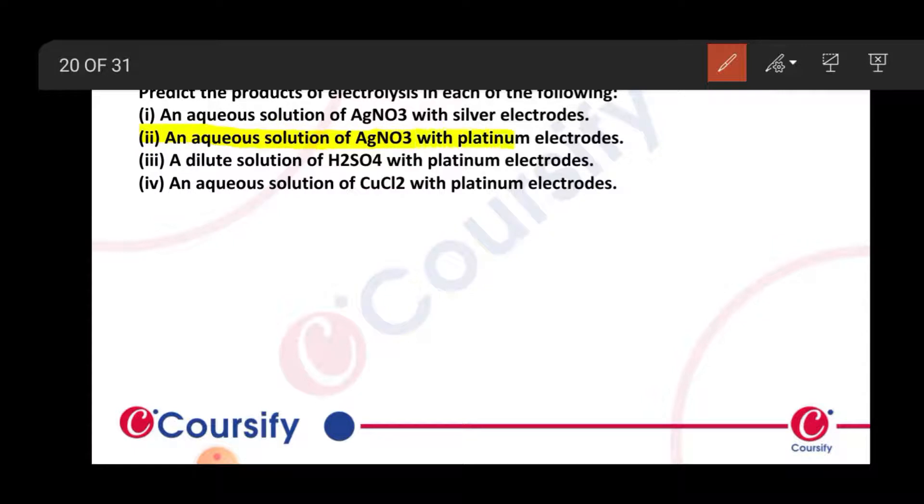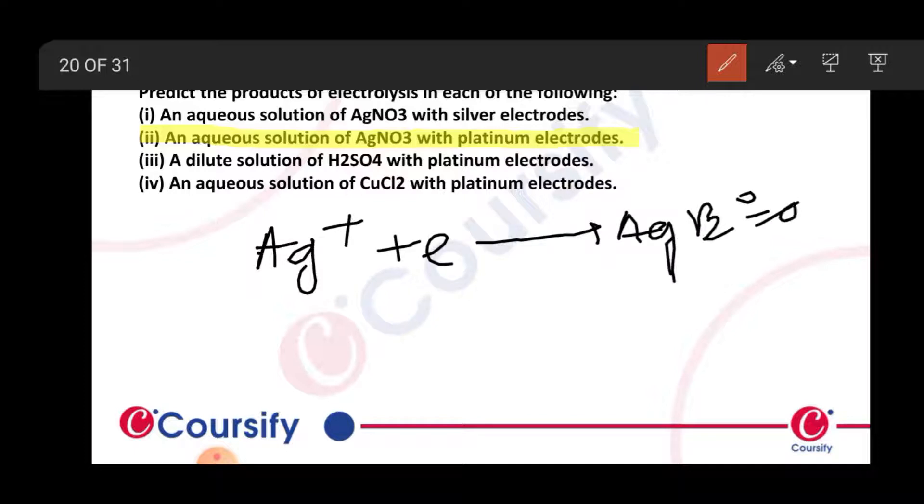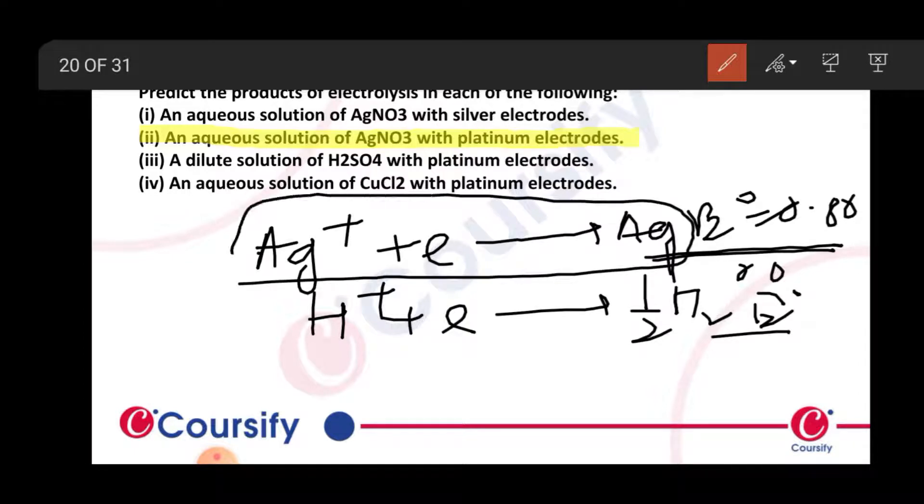Second one, aqueous solution of AgNO3 with platinum electrodes: Ag+ + e- → Ag, E0 = 0.80. H+ + e- → ½H2, E0 = 0.00. The higher E0 value takes place at the cathode, so Ag+ → Ag reaction occurs at the cathode. Silver deposition will occur.